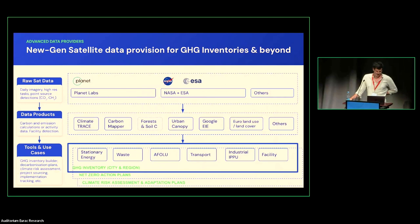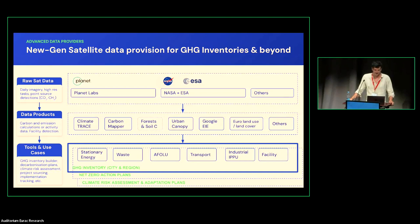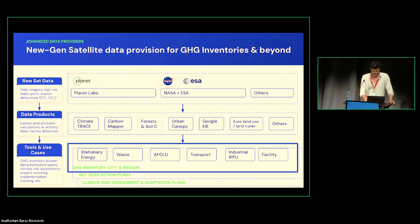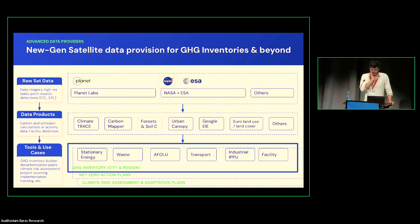The way we see it, there are three levels in the data supply chain — yesterday there was also a presentation on this. You have the raw satellite data from satellite companies, then data products that turn data into something more useful, and then where we come in: actually building tools that leverage all this data. Organizations like Climate Trace, Google EIE, and Open Earth Monitor datasets are super useful for us to implement into specific use cases for cities.